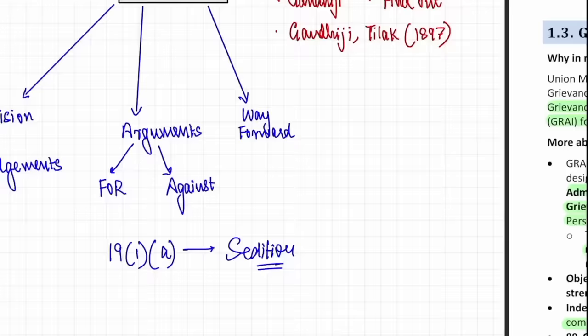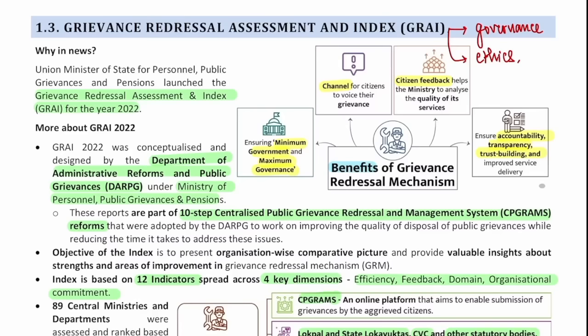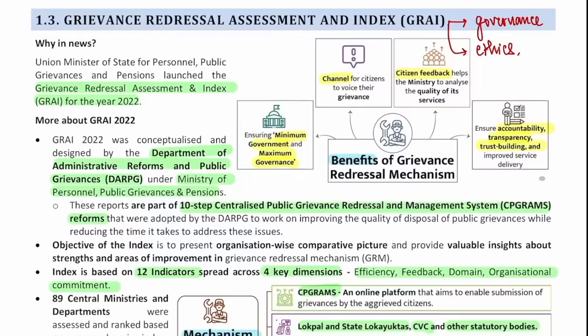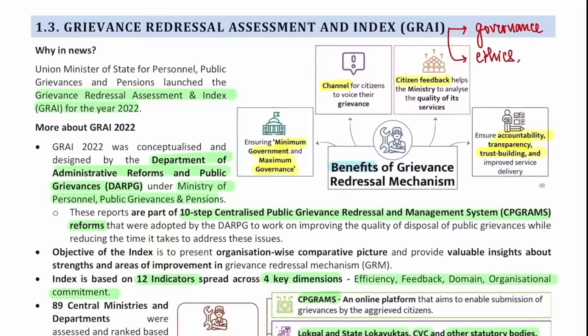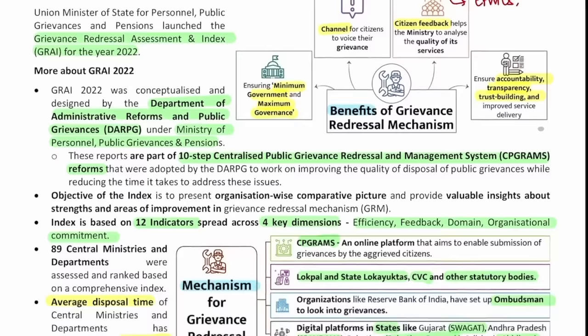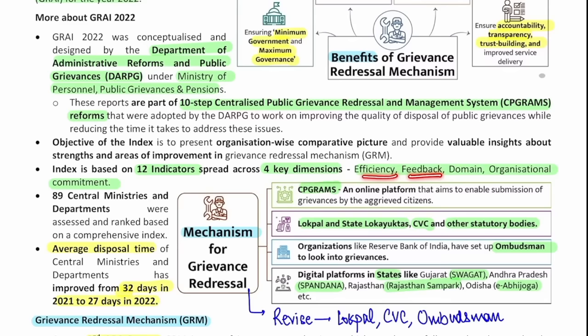Grievance Redressal Assessment Index — this topic is important for governance and ethics. For prelims, you need to know who released this index: it was conceptualized and designed by the Department of Administrative Reforms and Public Grievances under the Ministry of Personnel, Public Grievances and Pensions. This is part of 10-step centralized public grievance redressal and management system reforms. This is an index based on 12 indicators and 4 key dimensions: efficiency, feedback, domain, and organizational commitment. 89 central ministries and departments are being assessed.